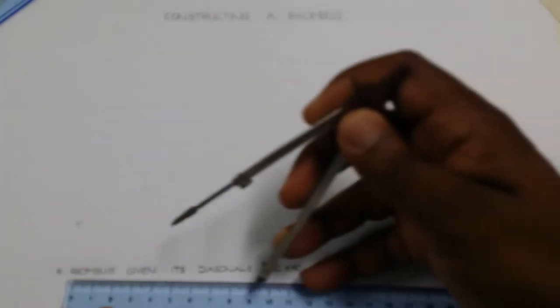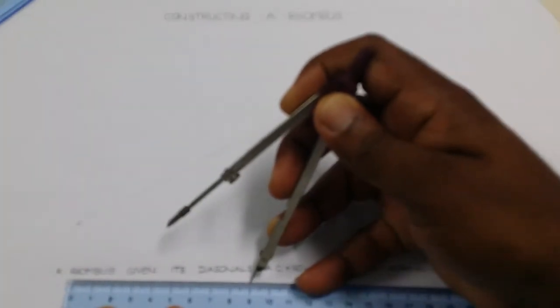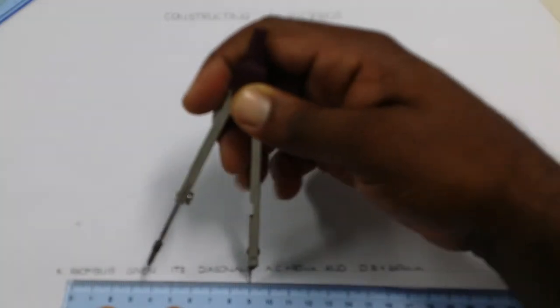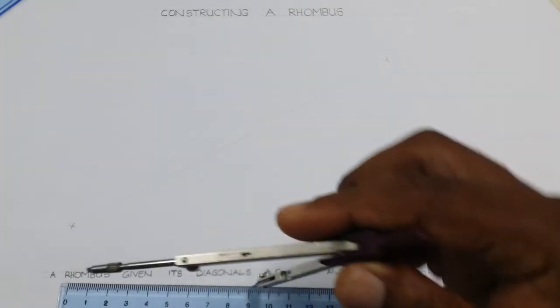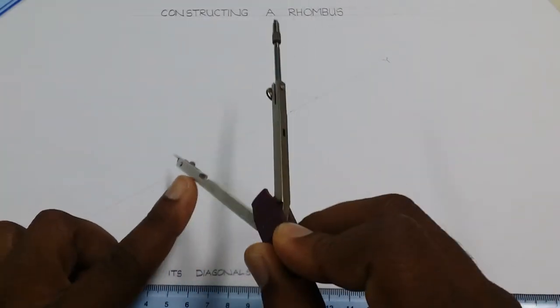We proceed with the two points given. The first point is AC, 90 mm, and I'm going to use my compass. Establish a radius of 9 cm, which is equivalent to 90 mm, and I'm going to place my compass point